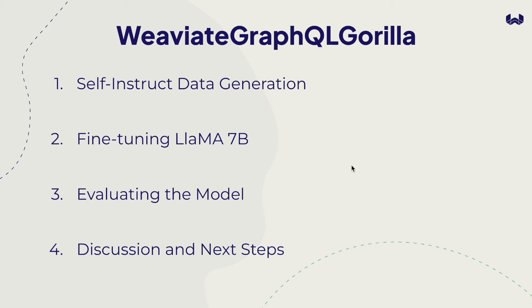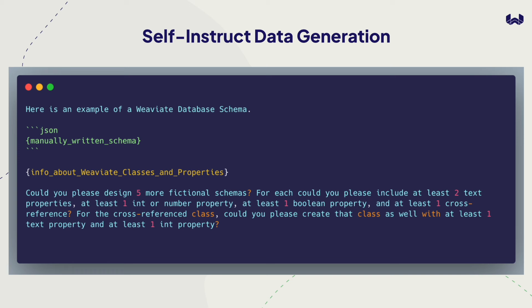Diving further into how we trained the Weaviate GraphQL Gorilla, we're going to cover four main parts: self-instruct data generation, fine-tuning LLaMA 7B, evaluating the model, and then discussion and next steps for the Gorilla project. Beginning with self-instruct data generation.